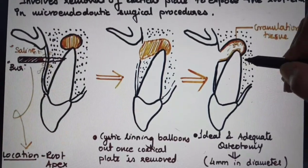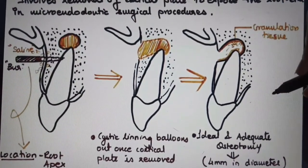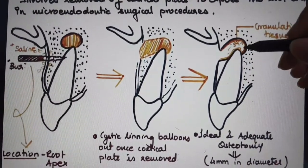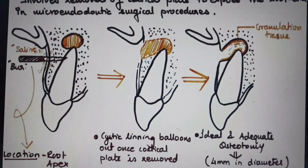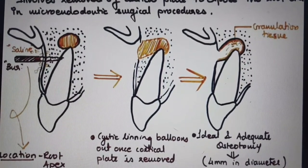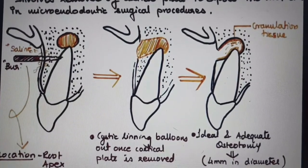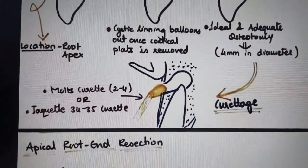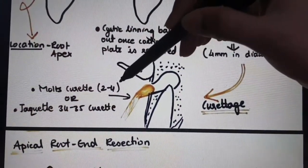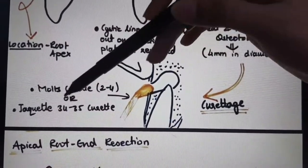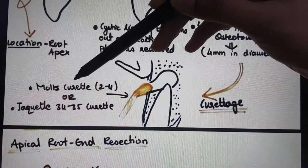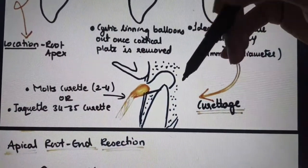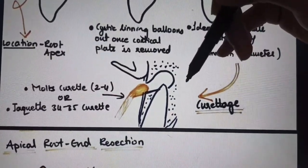This procedure of cleaning the area with saline and curettage is called apical curettage. Apical curettage is done with various instruments. The most common instrument used to clean the pathosis is Molt's curette number 2 and 4, or you can use a Jacquette 34 or 35 curette as an alternative. Once this area is fully cleaned, it's ready for the next step.